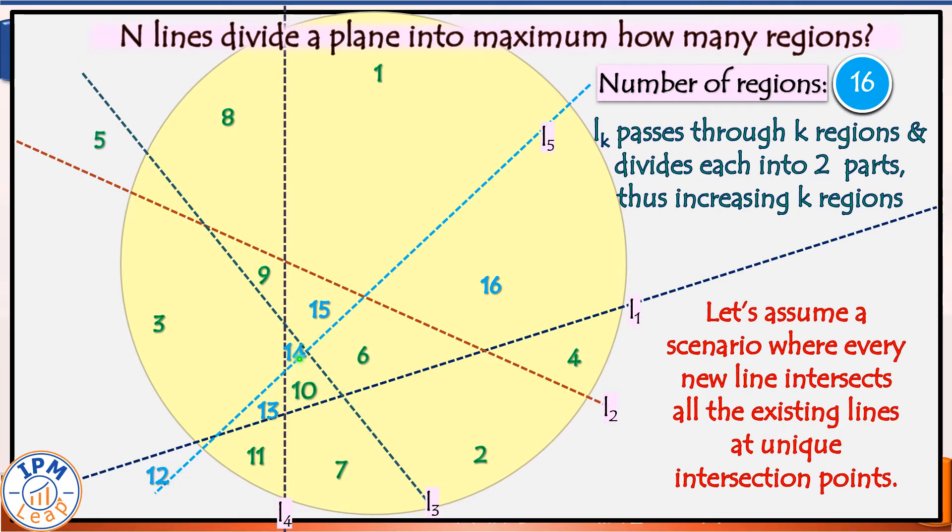3, 4, and 5, thereby increasing five more regions in the plane. The total number of regions now is 11 plus 5, which is 16.